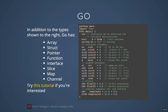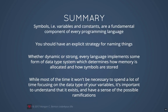To summarize: symbols — also known as variables and constants — are a fundamental component of pretty much every programming language. When you write your code, you should have an explicit strategy for naming things. Whether your programming language is dynamically typed or strongly typed, all of them implement some form of data type system which determines how memory is allocated and how symbols are stored. While it's often not necessary to focus heavily on data types, it is important to understand the concept, that data types exist, and the ramifications of choosing one type over another. Hope this has been useful — please let me know if you have questions. Have a great day.